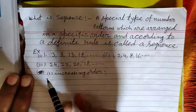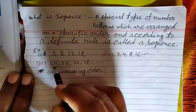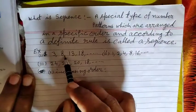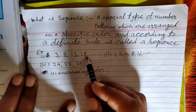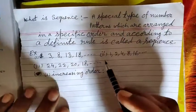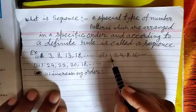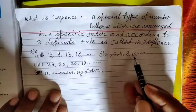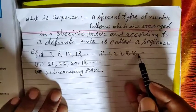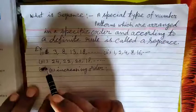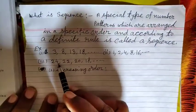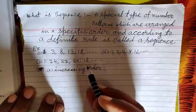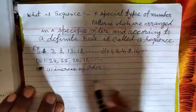For example, the first sequence is: 3, 8, 13, 18, and so on. The second example is: 1, 2, 4, 8, 16, and so on. The third example is: 24, 22, 20, 18, and so on.